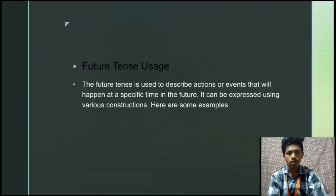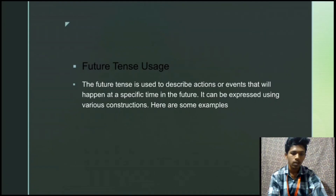Next, we can discuss about the future tense usage. The future tense is used to describe actions or events that will happen at a specific time in the future. It can be expressed using various constructions. Here are some examples: simple future, future continuous, future perfect, and future perfect continuous.